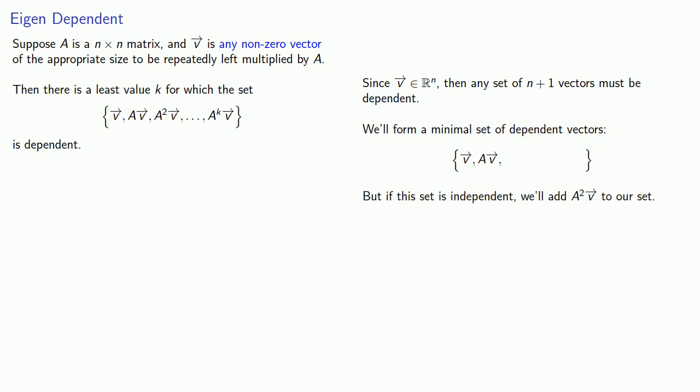But if the set is independent, we'll add A squared V to our set. And if the set V, AV, A squared V is dependent, we can stop.